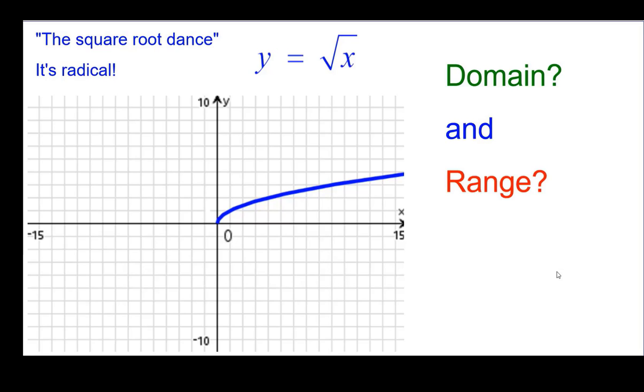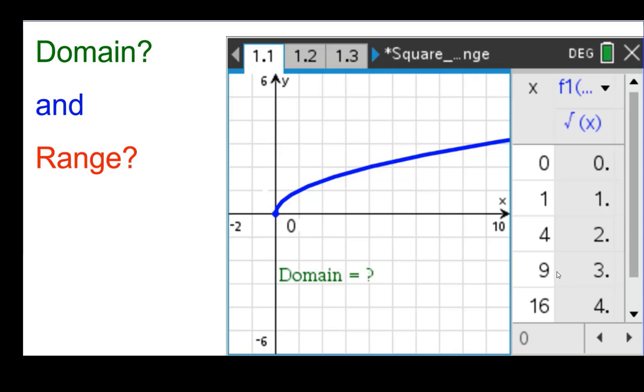Finally, let's look at domain and range. So let's look at the domain first. We have the table here and the graph. You can see that x starts at 0 and gets bigger. We can't take square roots of negative numbers.